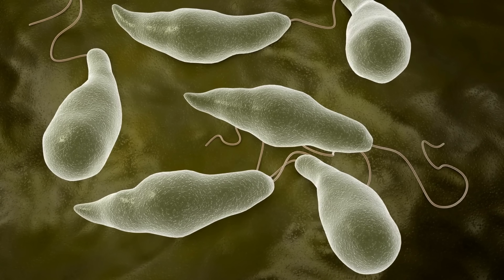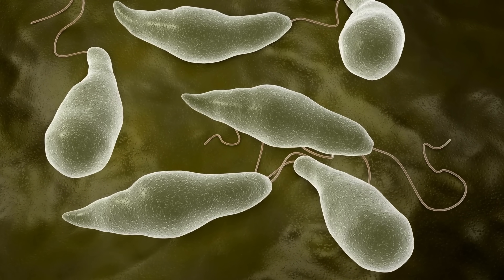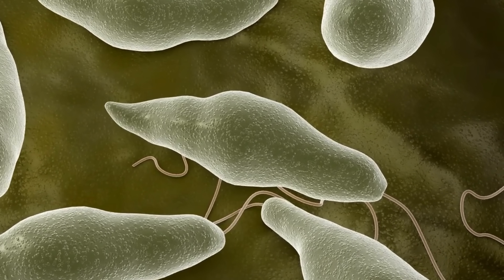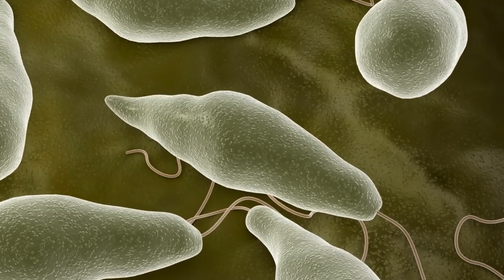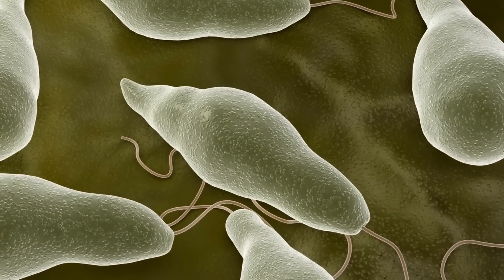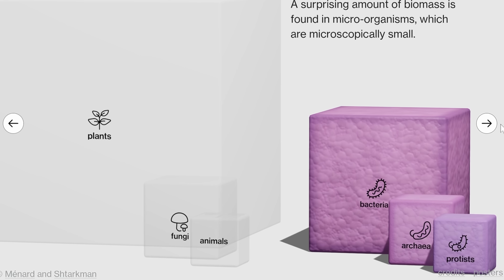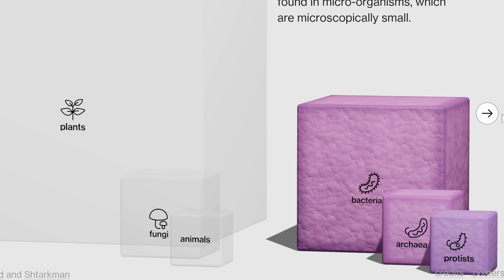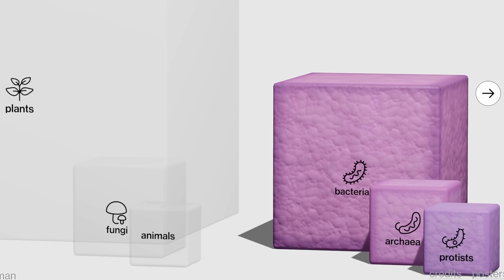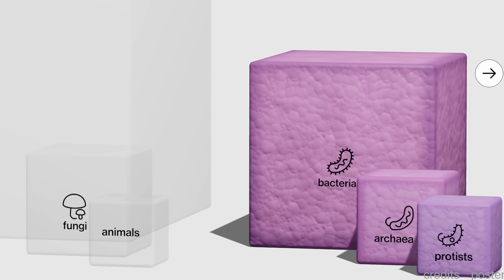Protists technically belong to the left side because they are eukaryotes, but they are just not animal, not plant, and not fungus. Overall, even the tiny bacteria represent an enormous biomass — much more than animals and fungi combined, only dwarfed by plants.